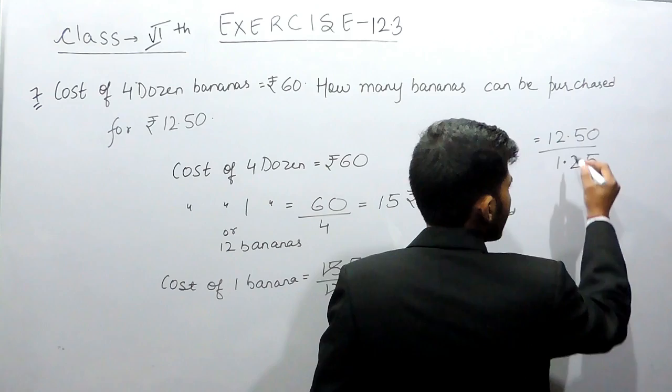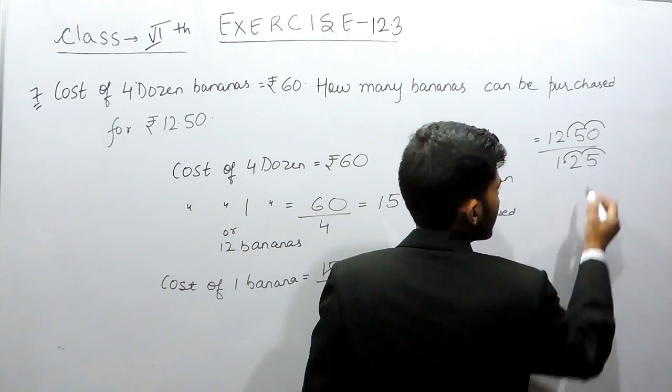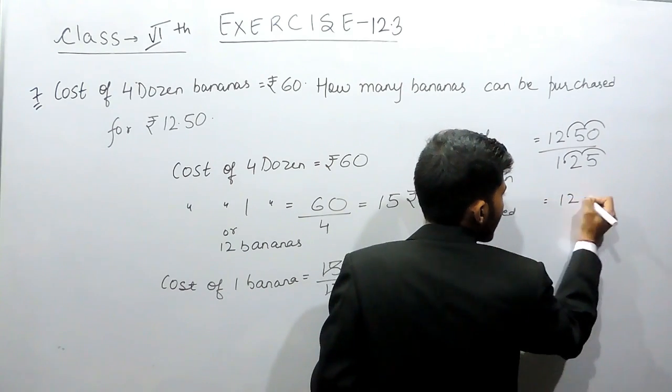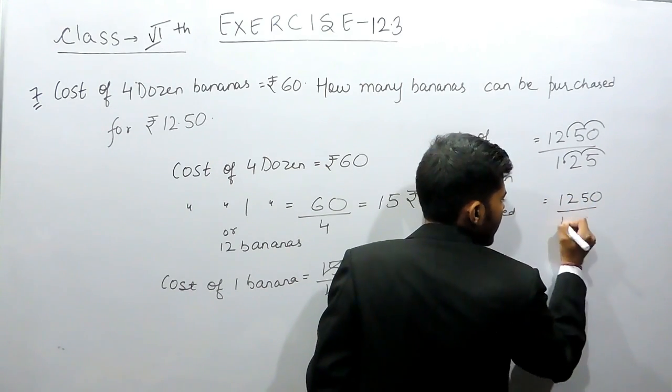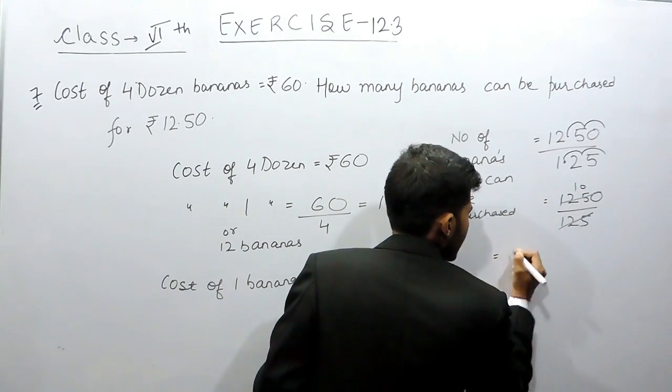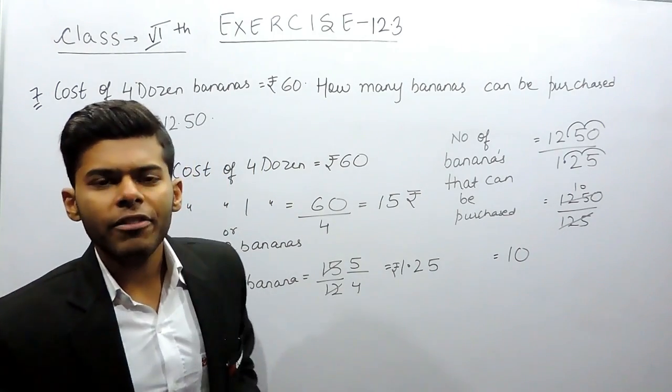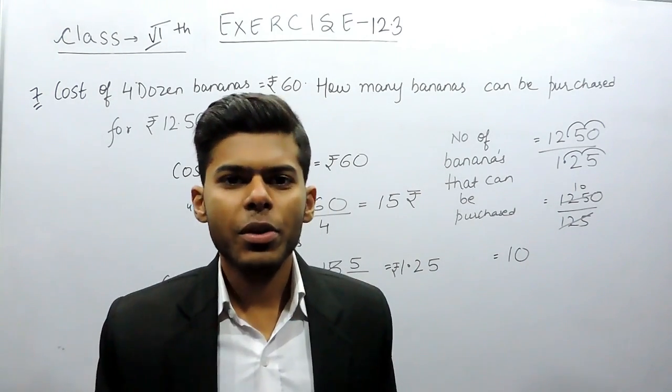Now we will remove the decimal, so it becomes 1250 by 125, and this will be 10. So we can say that 10 bananas can be purchased for rupees 12.50. This is how you can solve this question. Thank you.